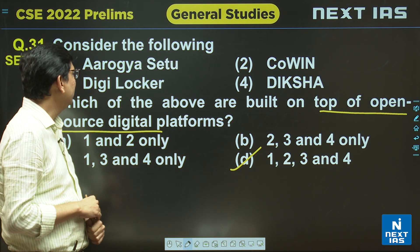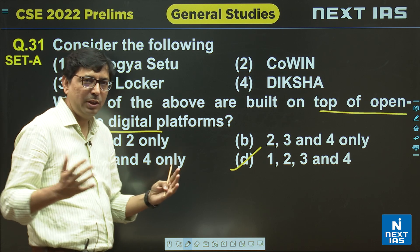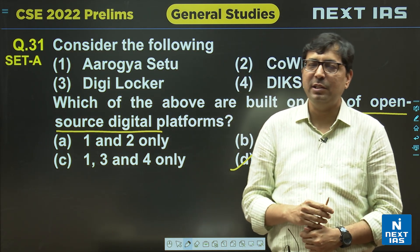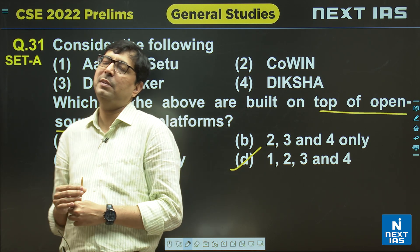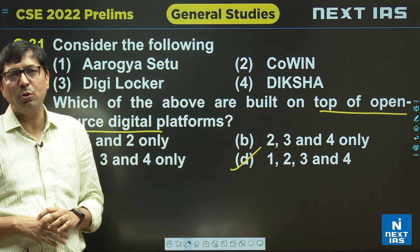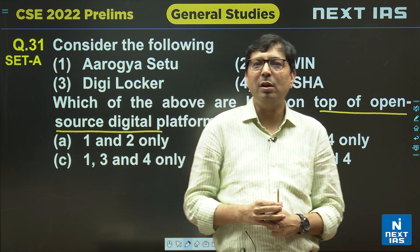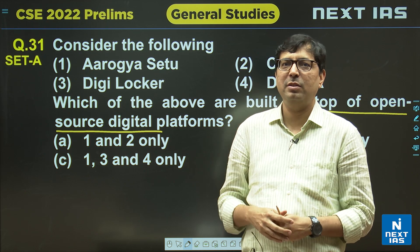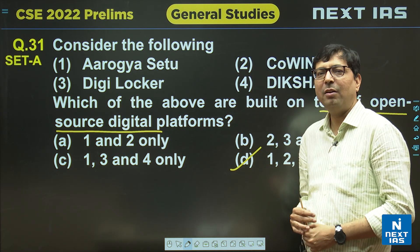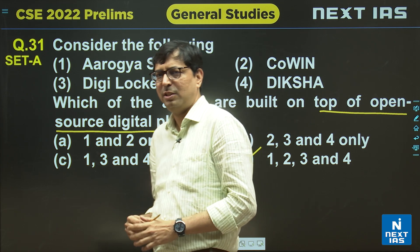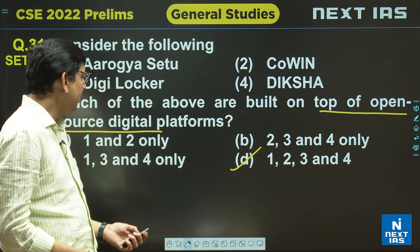Aarogya Setu was developed during COVID, CoWIN was for vaccination registration, DigiLocker is for storing documents, and DIKSHA is an educational app for teachers and learners. Open source means anybody can have access to the source code. These are all government apps for mass consumption, so they won't be proprietary software. The answer is D.